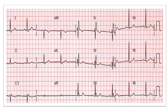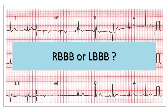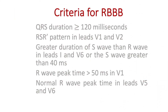This is the ECG of a 60-year-old male patient. This ECG is not completely normal. We will try to find out whether this patient has right bundle branch block or left bundle branch block in this ECG. First of all, we will understand the criteria for right bundle branch block, and then we will try to apply these criteria in our ECG.